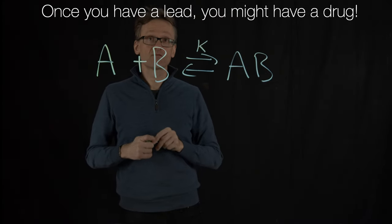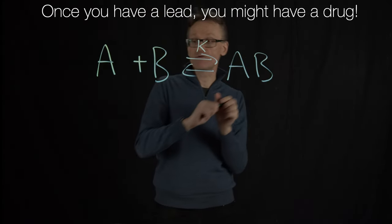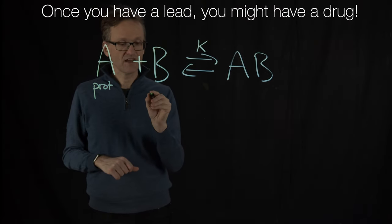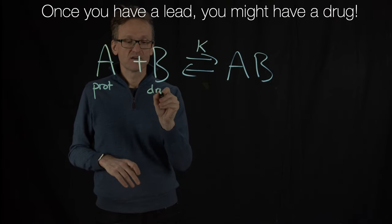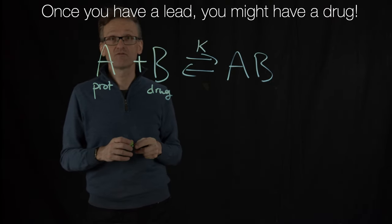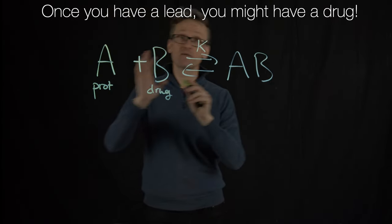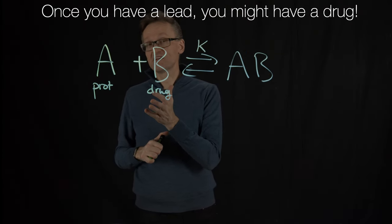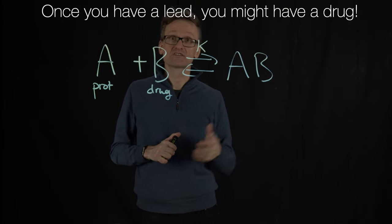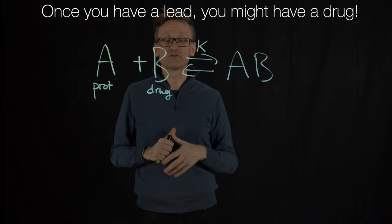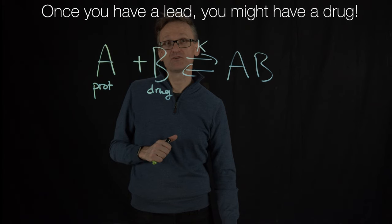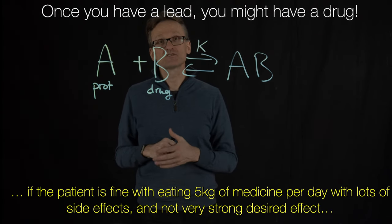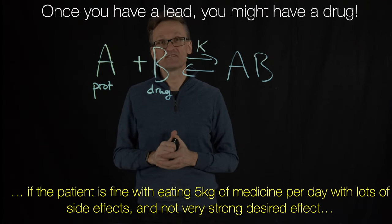We can fix that if we want to push the reaction more in that direction. If A is my protein and B is my drug, the easy way to fix that is to add more drug. The more drug I add, the more I push it in that direction. But if this is a factor of a thousand too low, I'm going to need to add roughly a factor of a thousand more drug. You will start to have side effects, and not only that, you might have to eat five kilos of drugs per day.